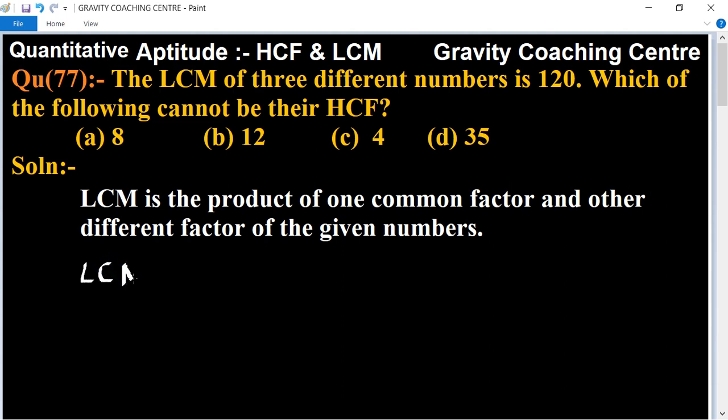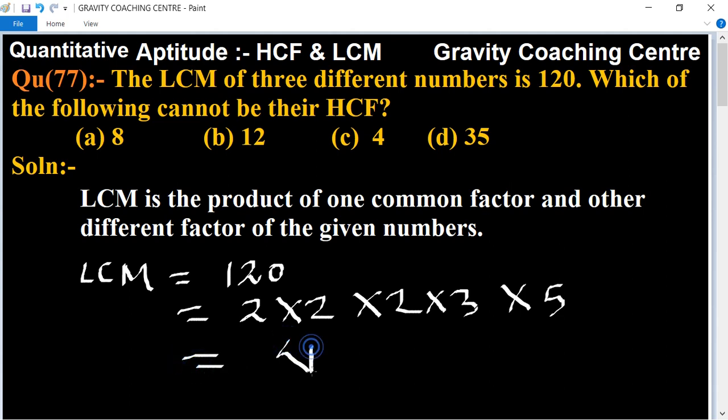Here LCM equals 120. Its prime factors are 2 × 2 × 2 × 3 × 5, which equals 4 × (2 × 3 × 5).